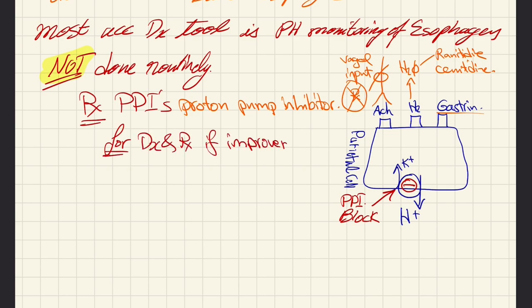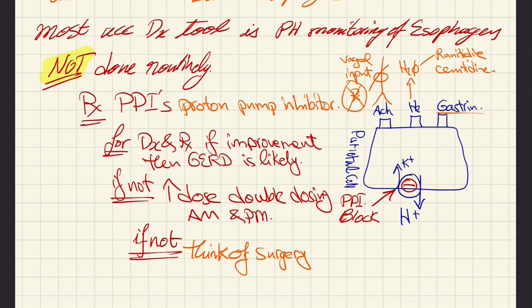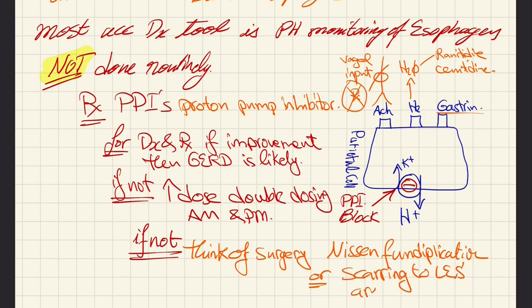It is worthy to mention that treatment of GERD is used as a diagnostic tool and as management. If we have improvement in symptoms, it means we have GERD. Usually we give PPIs to the patient and monitor symptoms. If we have improvements, then it's GERD. If we have no improvement, we can double the dose - AM and PM doses of PPIs. The final step in treatment is surgery called Nissen fundoplication.